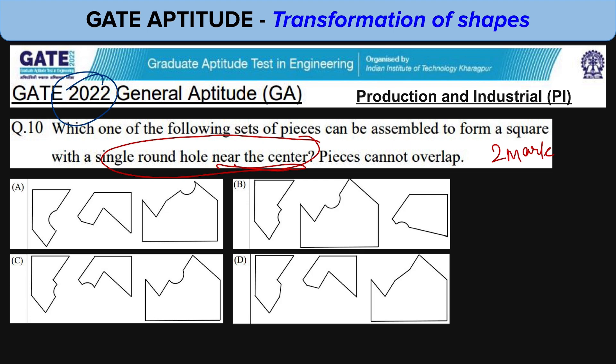Pieces cannot overlap. Let's look into the options. This option has no hole so it is eliminated. Here the hole is not near to the center so this is eliminated. Now we're left with B and C.